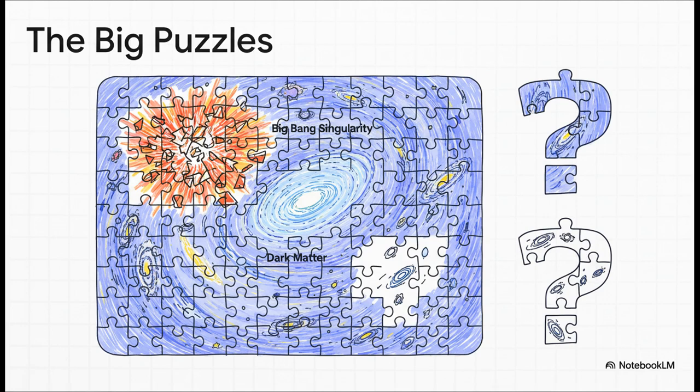And this massive conflict leaves these huge, gaping holes in our cosmic story. It means we have no real explanation for the very beginning, the Big Bang singularity. That's the point where all our math just collapses. And it means that to make our observations of the universe fit our broken equations, we've basically had to invent these placeholders, dark matter and dark energy. They're names we give to the mysteries we can't solve.